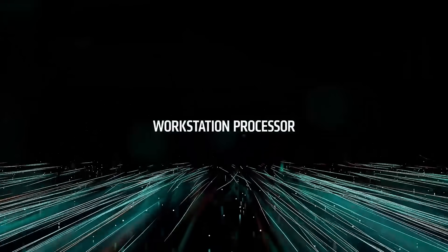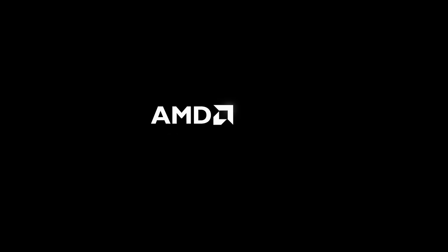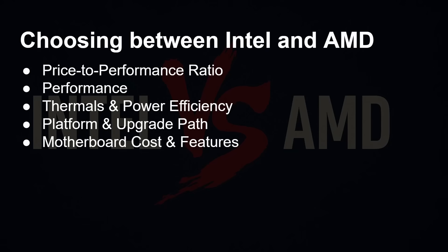There's also the consideration of upgrade path: if you pick a particular socket on a motherboard, will it be compatible with the next generation? Intel tends to change its socket definitions quite often, while AMD tends to change less frequently. Motherboard costs are also a factor, along with chipset features like Thunderbolt or USB 4. These are not just CPU considerations — there are other platform-level things to think about.